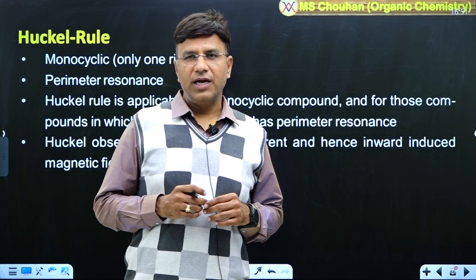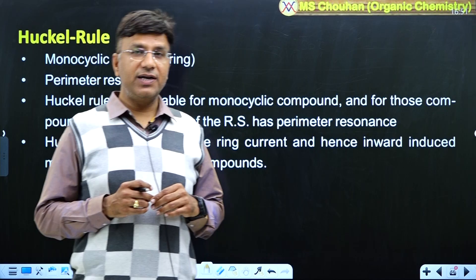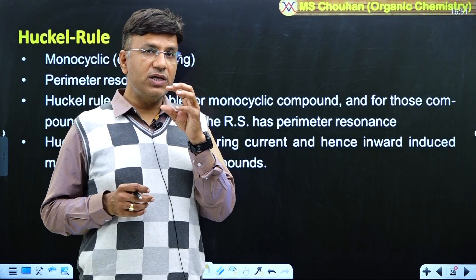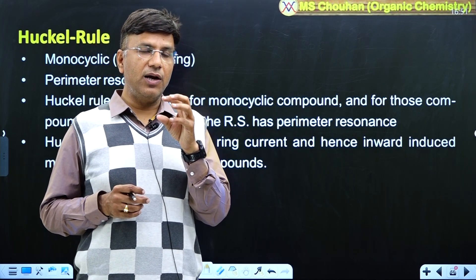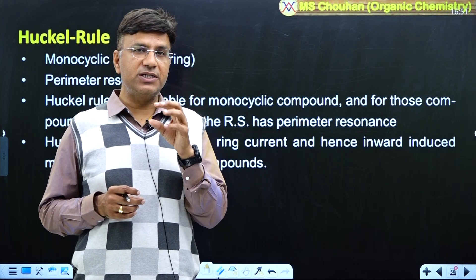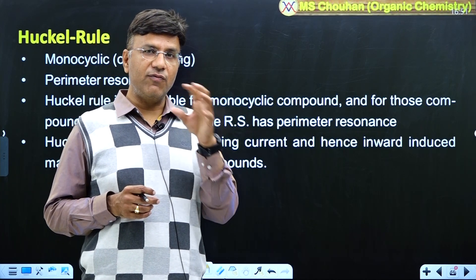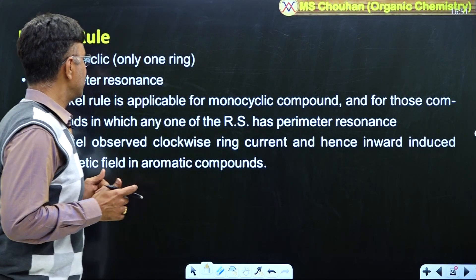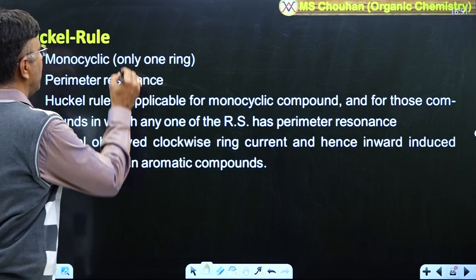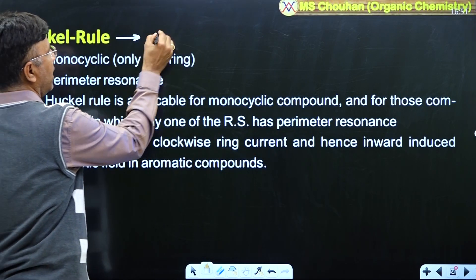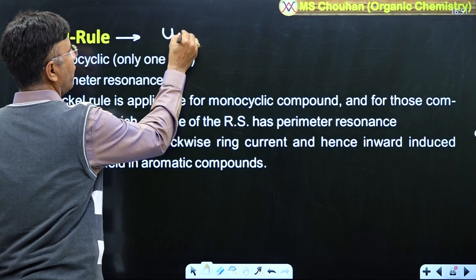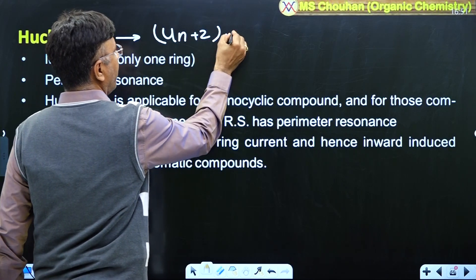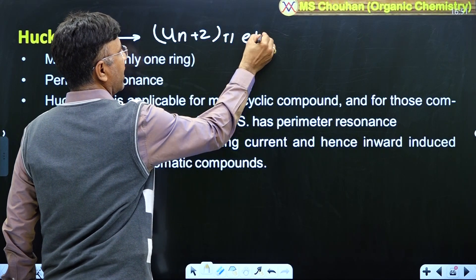Hello everyone. In today's lecture we will discuss when the Hückel rule is applicable — Hückel rule for aromaticity, when we have to apply it, and what is the condition. First of all, what is Hückel rule? Hückel rule must have 4n + 2 π electrons.